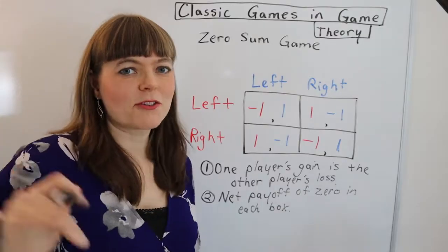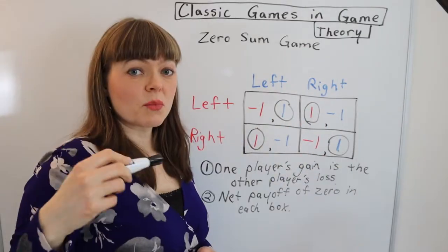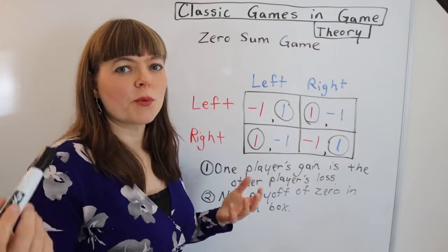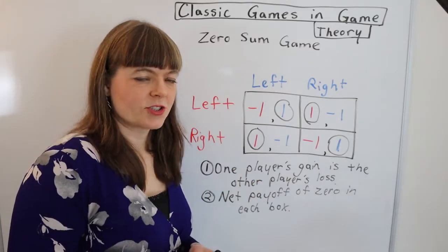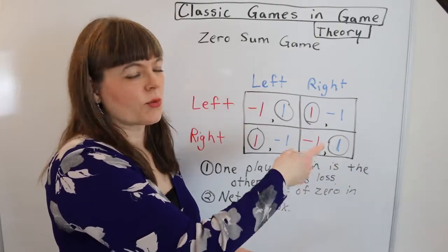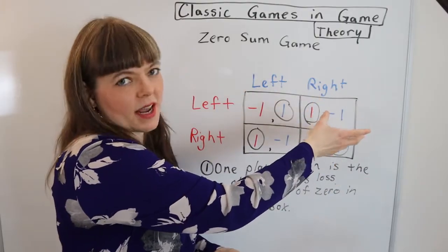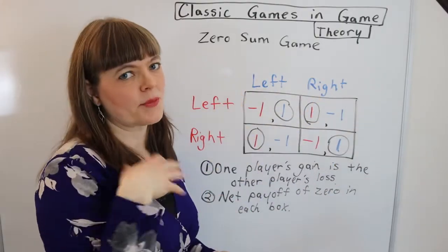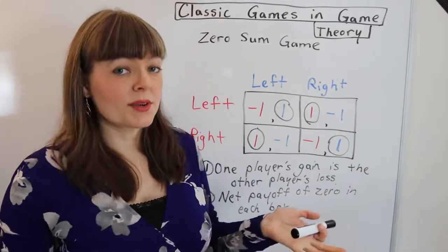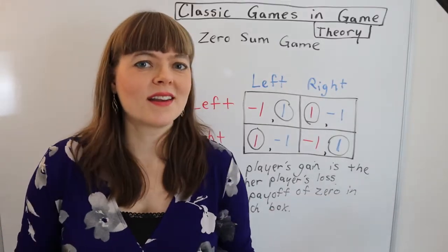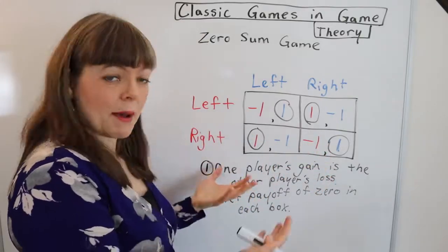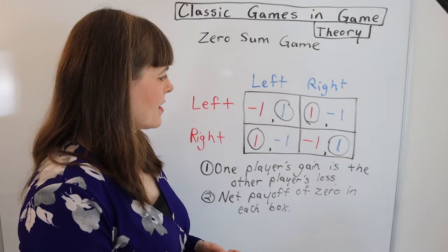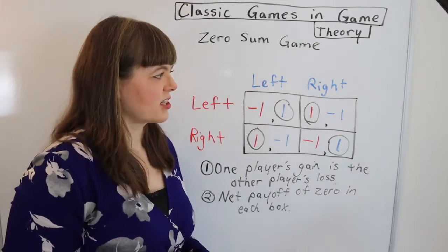Let's solve for Nash equilibrium. We notice with zero sum games that there is no pure strategies Nash equilibrium. There will be mixed strategies. In this case, you're going to want to mix 50% of the time you go right, 50% of the time you go left. That's actually what happens in the real world when soccer goalies choose to anticipate right and left. You can map this onto the real world quite a bit, but there's no pure strategies Nash equilibrium.